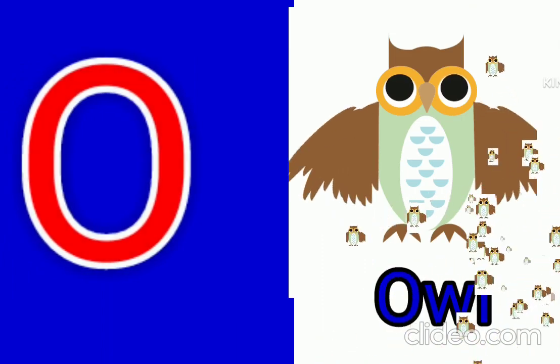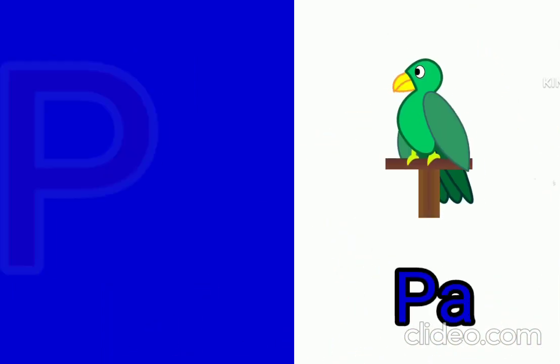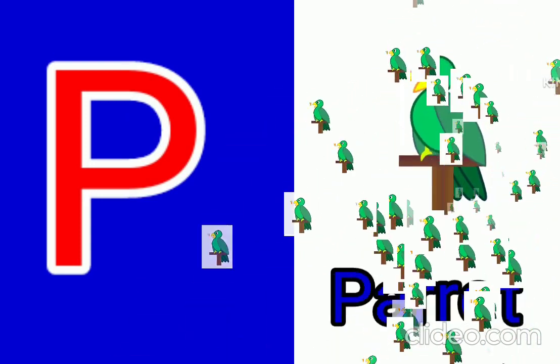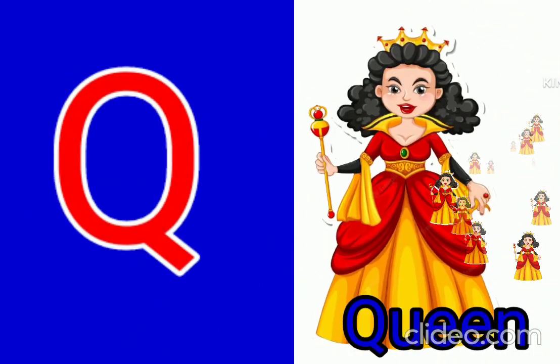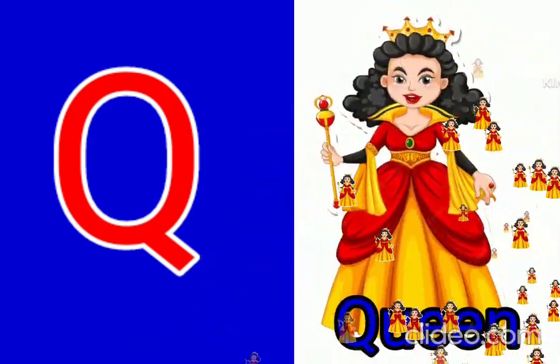O for owl, owl means ullu. P for parrot, parrot means daughter. Q for queen, queen means runny.